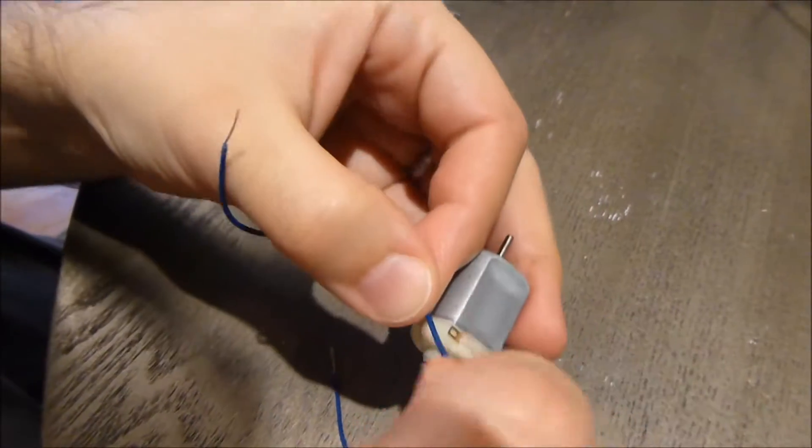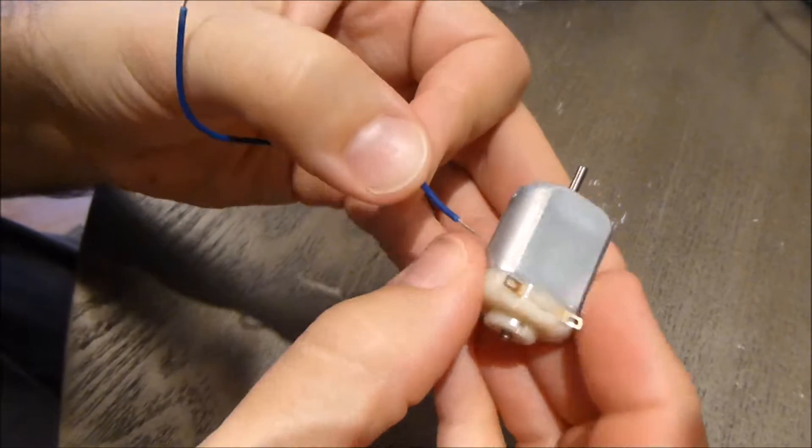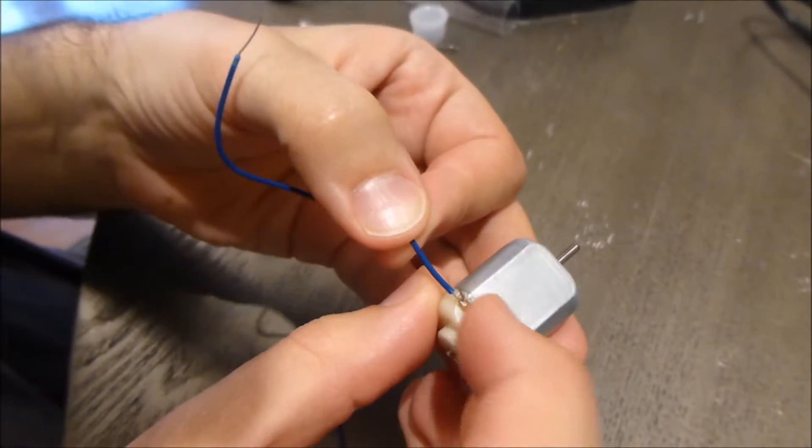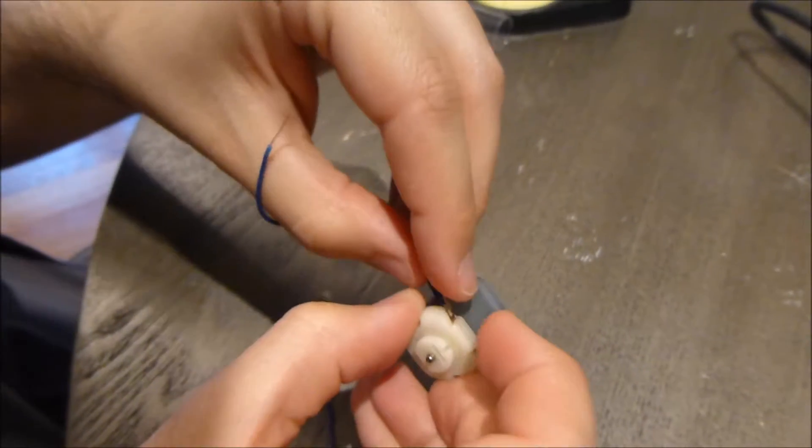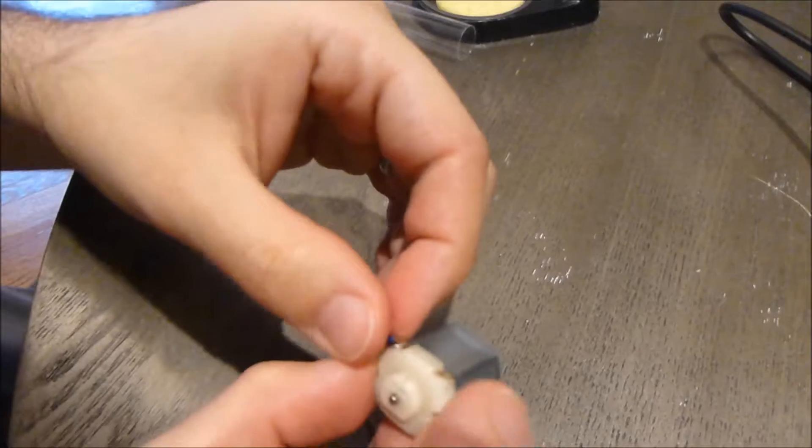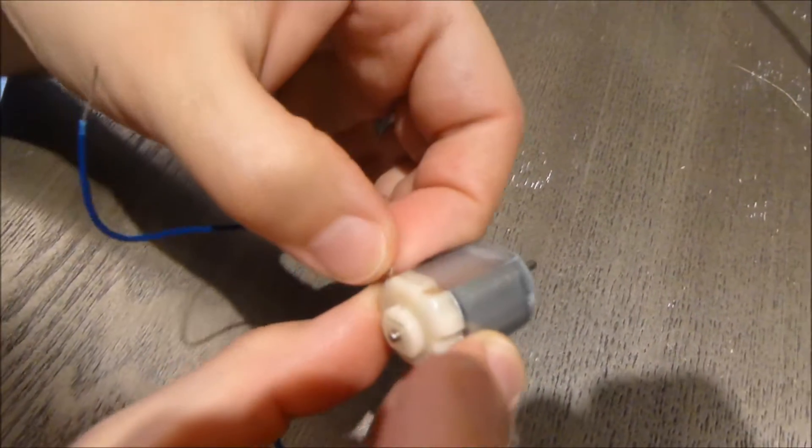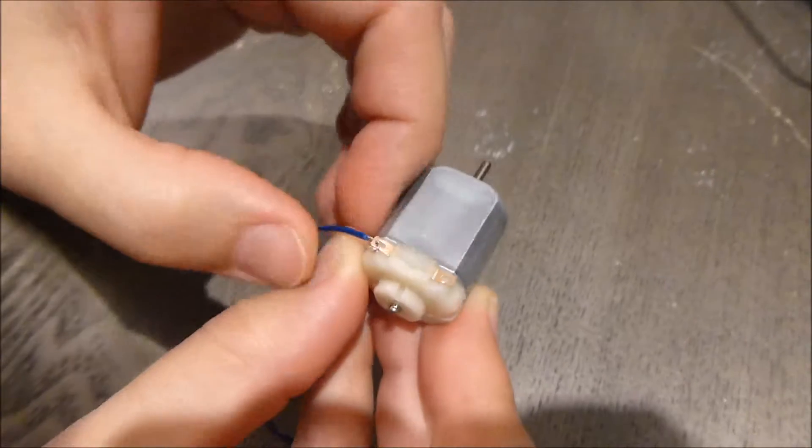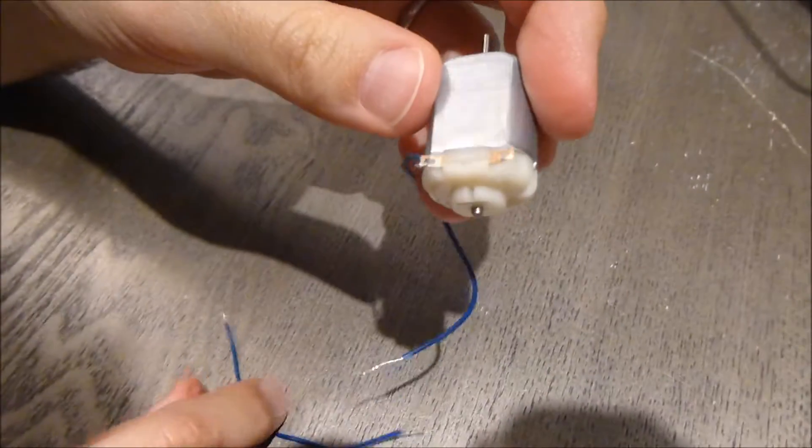We're going to thread it through kind of like we're threading through a needle. It can be a little finicky, but just put it through like that, and then we're going to bend it over and kind of create like a little U-shape and just twist it on there so it stays put temporarily. We just don't want it falling out while we attach it permanently.